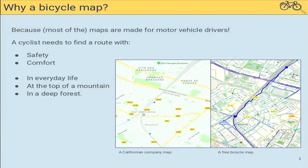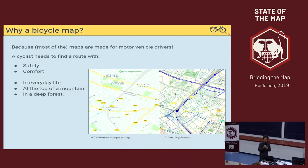First of all, why do we need a bicycle map, and why is it different from a regular map? Most maps, like this business map on the left, are made with motor vehicles in mind. They show the main roads and are designed with a car approach, whereas a cyclist actually wants a safe and comfortable way, whether for everyday life in the city, sports, touring, or mountain biking.